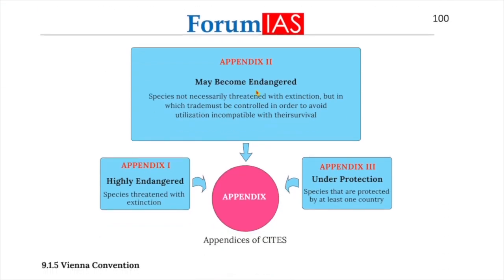There are three appendices to CITES. Appendix I lists highly endangered species threatened with extinction. Appendix II lists species not necessarily threatened with extinction but in which trade must be controlled to avoid utilization incompatible with their survival. Appendix III deals with species protected by at least one country.